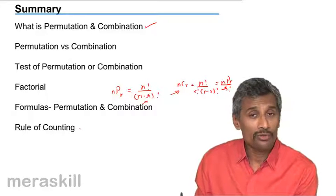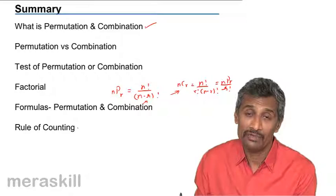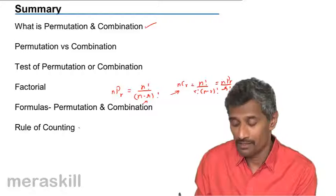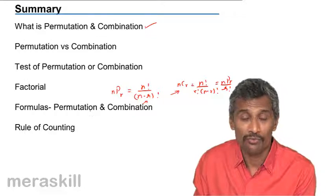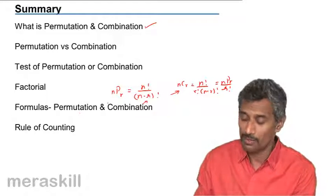Then the rule of counting, the last part which we did, which said that whenever you have a situation of and, we need to multiply both the possibilities and whenever you have a situation of or, we need to add both the possibilities.